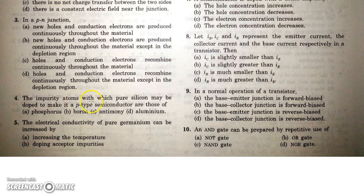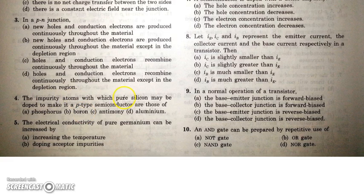In the next question: which impurity atoms should be added to pure silicon to make it a P-type semiconductor? For doping to form a P-type semiconductor, the impurity should be trivalent, and the size should be similar to that of silicon atoms. Both boron and aluminium are trivalent and have sizes quite similar to silicon, so they are the correct choices.